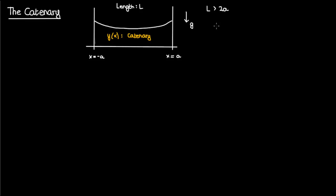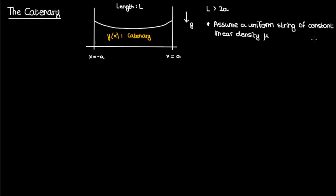Now let's begin solving our problem to determine the equation of this catenary. A few things to note before I start: number 1 is that we'll assume this string is uniform, with a constant mass per unit length of mu. Number 2 is that we'll assume the ends of the string hang at the same horizontal level of y equals 0. And number 3 is that we'll assume the direction of positive y is upwards.